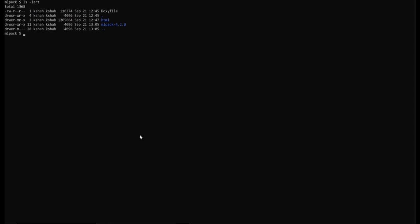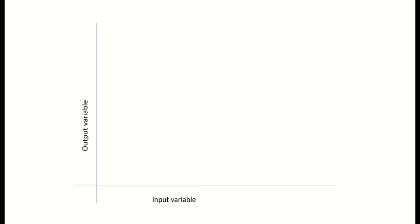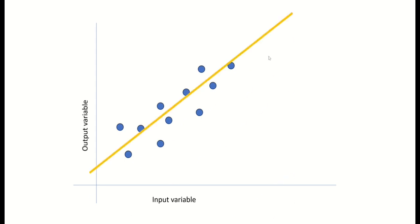In this video, I will show you how to use mlpack with an example. We will implement linear regression using mlpack. In linear regression, we have one input variable and one output variable, and we have some points. Our goal is to pass a line through these points such that the distance of each point from the line is as minimum as possible.